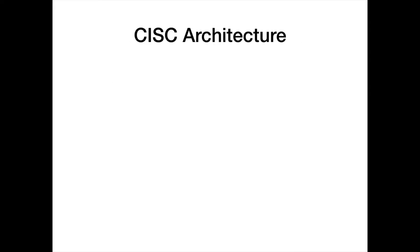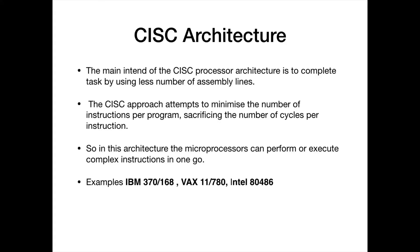The first type of architecture is CISC architecture — complex instruction set computing architecture. The main intent of the CISC processor architecture is to complete tasks by using fewer lines of assembly. The CISC approach attempts to minimize the number of instructions per program, sacrificing the number of cycles per instruction. Basically in this architecture, the microprocessors can execute complex instructions in one go. Examples of CISC architectures are IBM 370-168, VAX 11780, and Intel 80486.